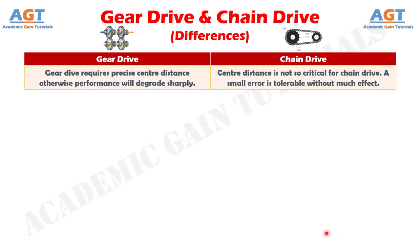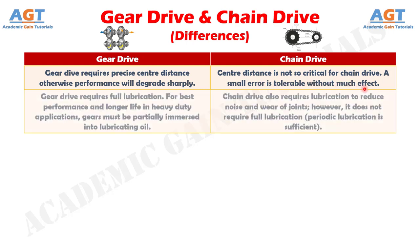Number 6: Gear drive requires precise center distance; otherwise performance will degrade sharply. Whereas, center distance is not so critical for chain drive — a small error is tolerable without much effect.